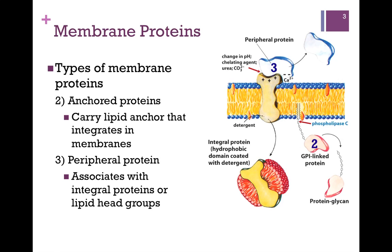Our third type of membrane protein is a peripheral protein, indicated by the number three here. It is not directly attached to the membrane — it can dissociate away, as indicated here. It might associate with an integral protein, as in this illustration.